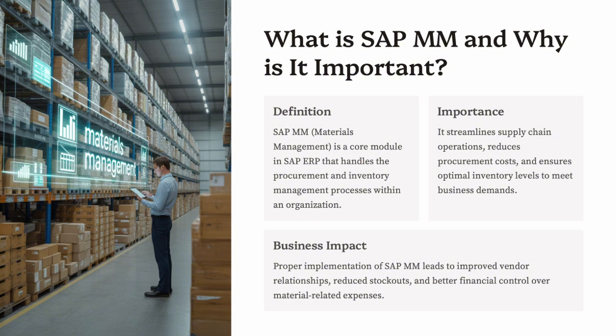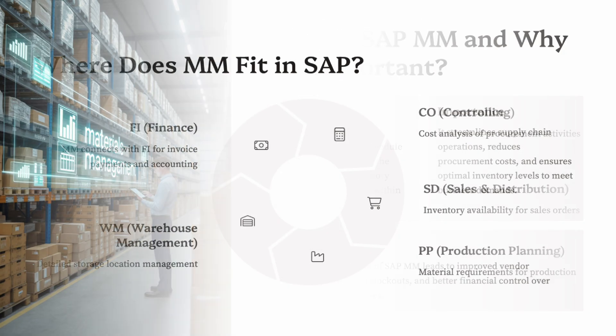Section 1: Understanding SAP MM. So what exactly is SAP MM? SAP MM stands for Materials Management, and it is a core functional module in SAP ERP that deals with procurement, inventory, and material valuation. This module helps organizations handle the logistics of purchasing raw materials and services, managing inventory at warehouse or plant level, handling vendor relationships and pricing, and verifying invoices before payment. Think of SAP MM as the engine of procurement and stock movement in a company.